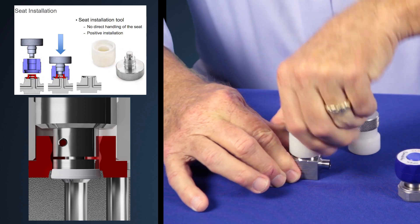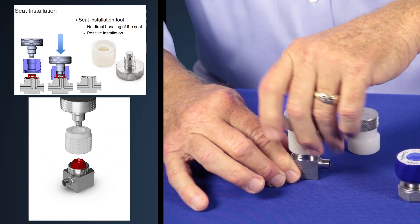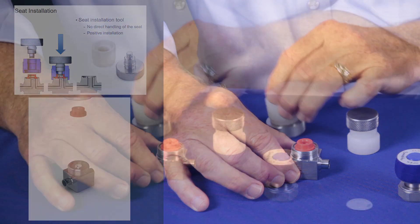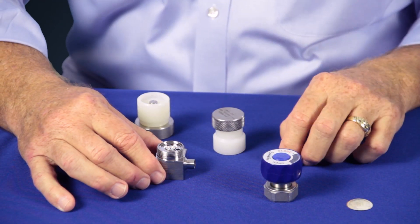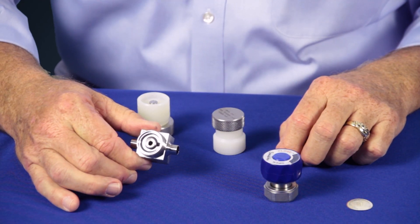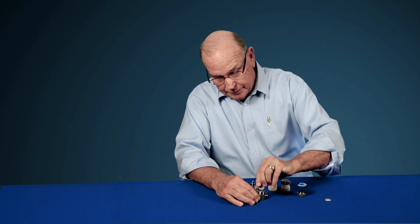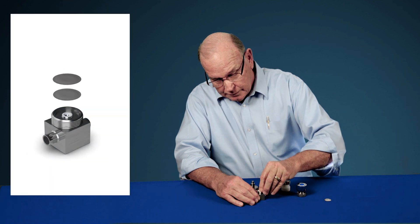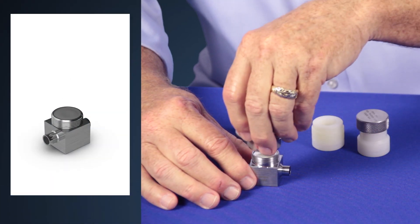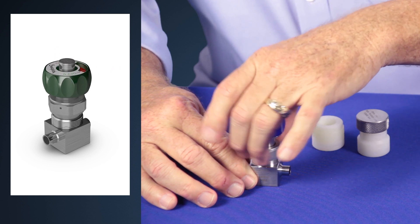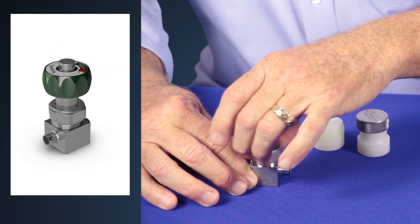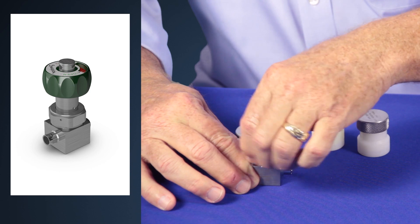Then you remove the seat installation tool and you remove the seat carrier. The seat is now permanently attached to the body. Now you can tighten the bonnet nut according to installation instructions.